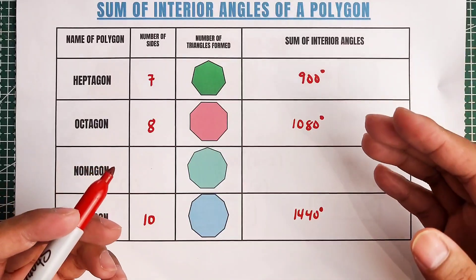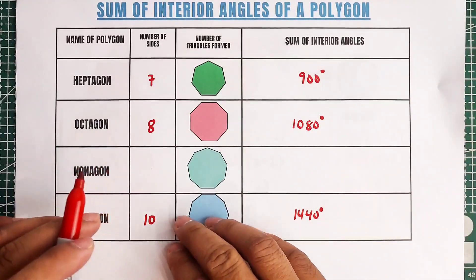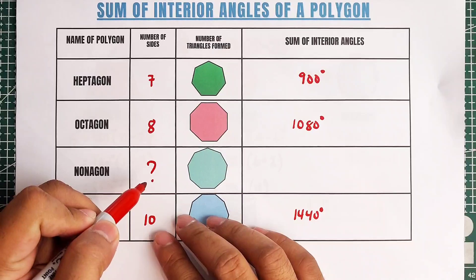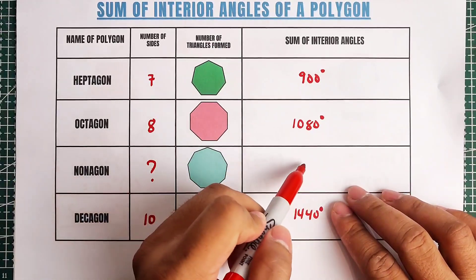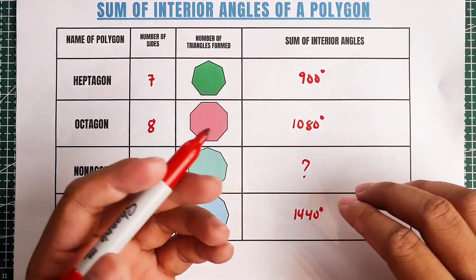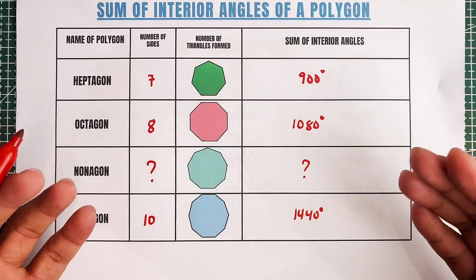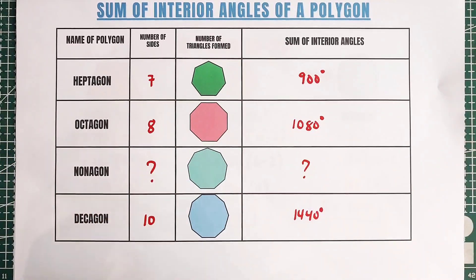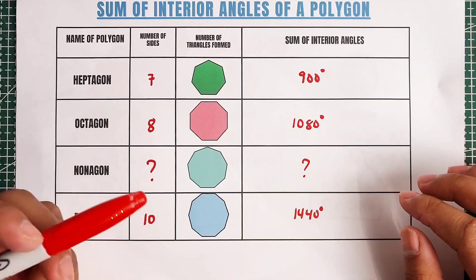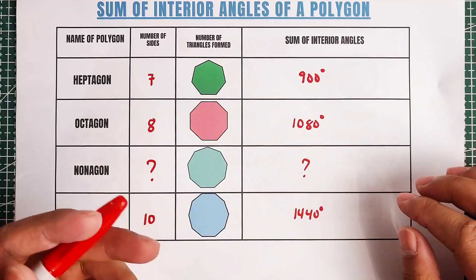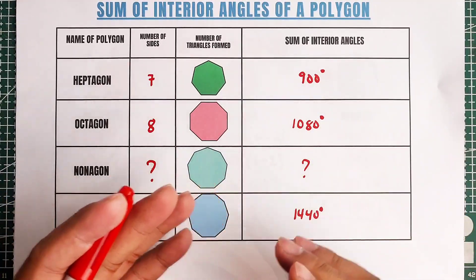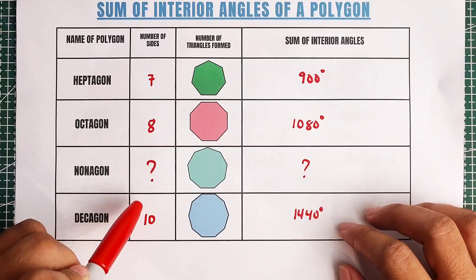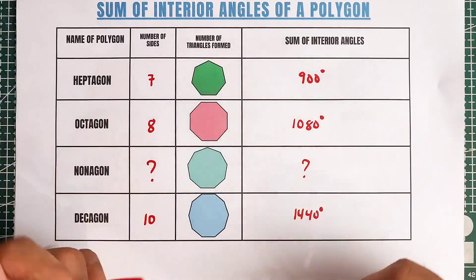Now guys, as you can see, we are missing the nonagon — how many sides does a nonagon have, and what is the sum of the interior angles of a regular nonagon? If you're new to my channel, don't forget to like and subscribe, and hit the bell button to be updated on our latest uploads. Don't forget to comment your answer about this question. That's all — goodbye!